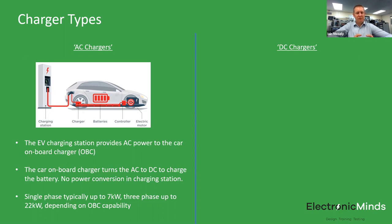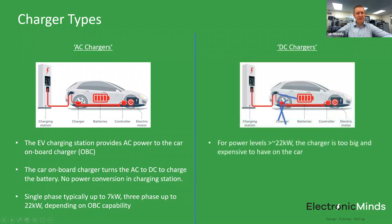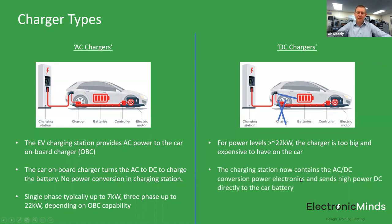If you want to charge faster than that, the onboard electronics box becomes too big and expensive to keep on the car — you can't have a high-power converter sitting on-board doing nothing most of the time. In those scenarios, the charging station itself contains the power converter block; it's as if the onboard charger has shifted out into the external station. The power levels are then determined by battery capability. It's a subtle difference: it's just the position of that electronics box that determines whether it's an AC or DC charger.